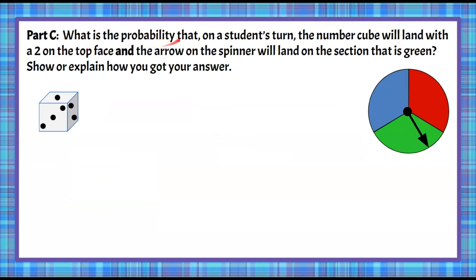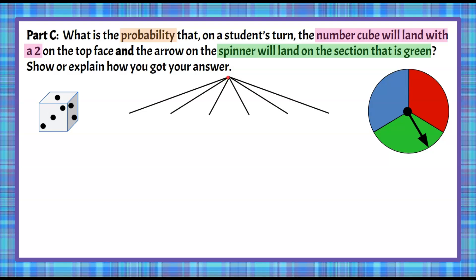Here's Part C: what is the probability that the number cube lands on a 2 and the spinner lands on green? This involves two events — we call this compound probability. We're going to make a tree diagram. The first event has six possible outcomes from rolling the number cube: 1, 2, 3, 4, 5, 6 — making six branches.